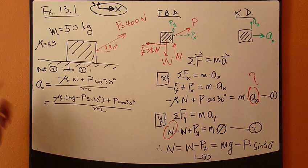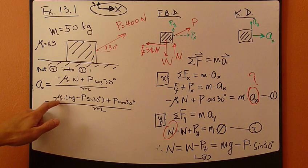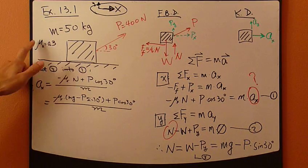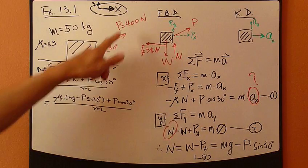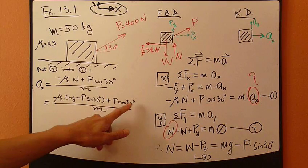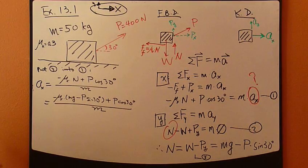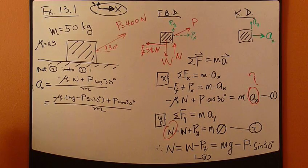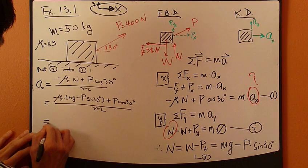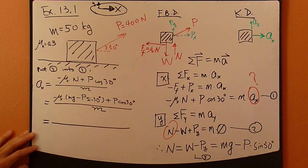So, first of all, I'm going to rearrange this equation so that my a_x, the unknown appears to the left-hand side. Equal, negative mu_k times n plus p cosine 30 divided by m. Now, bring in this equation three now. Negative mu_k times n is m g minus p sine 30 plus p cosine 30 divided by m. So, this is your a_x. This is the unknown. So, do we know everything else? mu_k is given, mass is given, g is constant, p is given, sine 30, p cosine 30, mass is given. So, everything on the left-hand side is given.